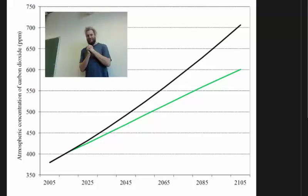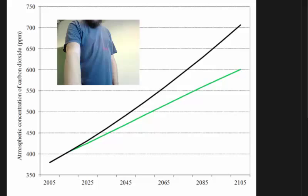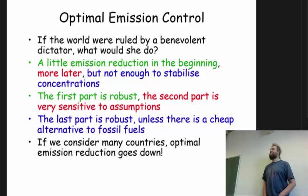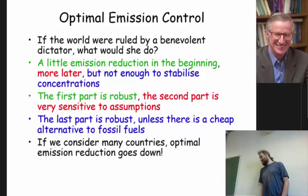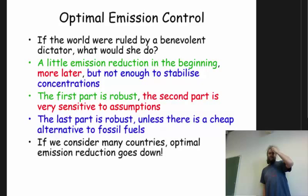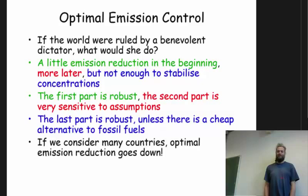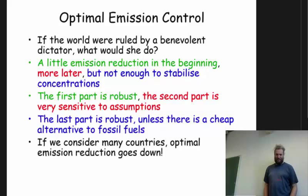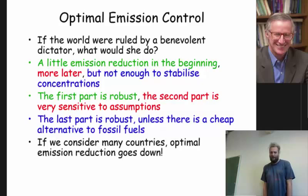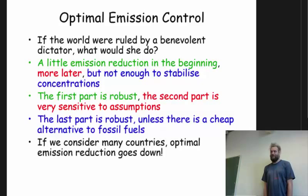Preliminary versions of this were published between 1982 and 1991, but this result was first published in 1992. And it caused a bit of a stir — not everybody immediately embraced it. Since Nordhaus asked the question: if the world were ruled by a benevolent dictator, what would she do? Essentially what Nordhaus concluded is three things: a little emission reduction in the beginning — you start with a low carbon tax — then the carbon tax goes up all the time, with more emission reduction later, but not enough to stabilize concentration.